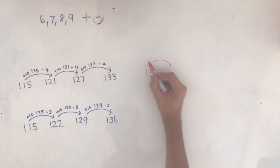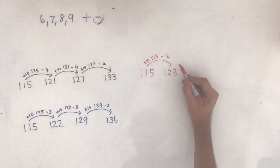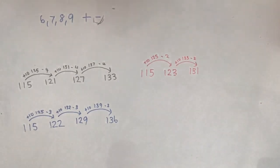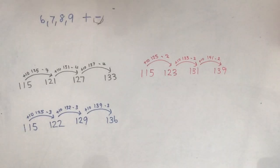So 115 add 10 is 125, minus 2 is 123. 123 add 10 is 133, minus 2 is 131. Then 131 add 10 is 141, minus 2 is 139.